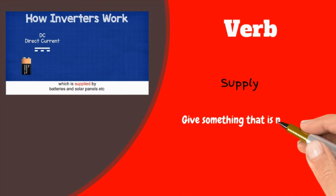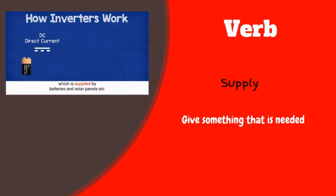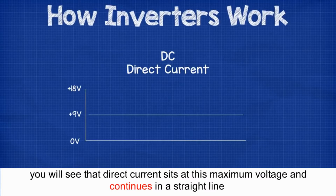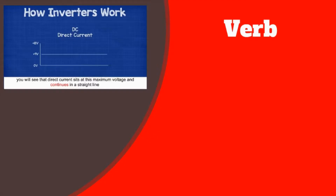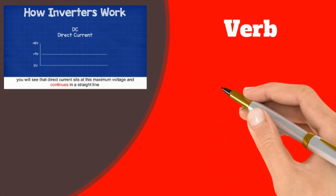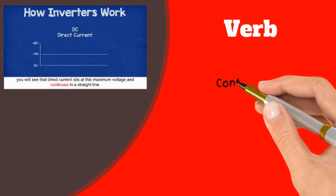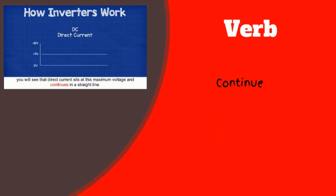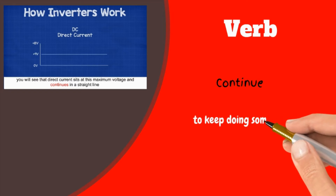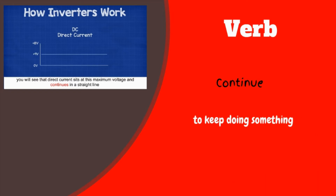Supply: to give something that is needed. You will see that direct current sits at this maximum voltage and continues in a straight line. Continue: to keep doing something.